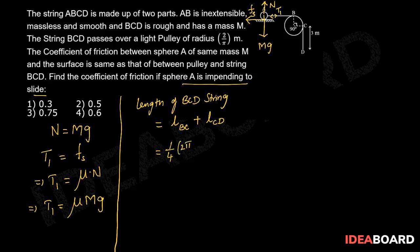plus 3 meters and radius of the pulley is given as 2 upon pi meter. So substituting that value here we get 1 meter plus 3 meter which is 4 meter.